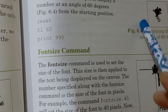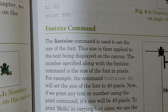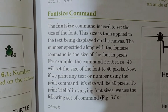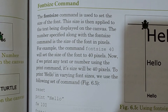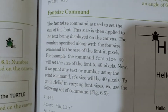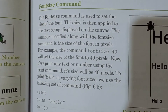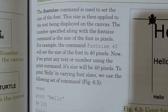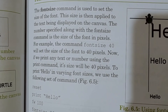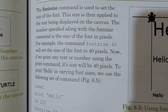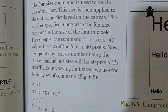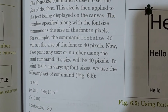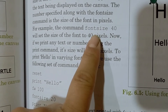Now we will write about the font size command. The font size command is used to set the size of the font. This size is then applied to the text being displayed on the canvas. The number specified along with the font size command is the size of the font in pixels. For example, the command font size 40 will set the size of the font to 40 pixels.